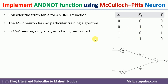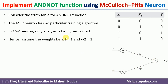The network looks something like this. The input layer has two neurons and the output layer has one neuron. x1 and x2 are the inputs, w1 and w2 are the weights. I will initialize the weights w1 and w2 to 1 and then we will see whether it will work or not. If it doesn't work, we will try different values for w1 and w2.